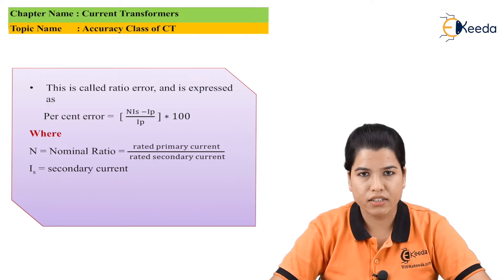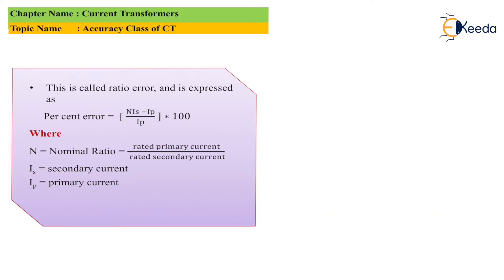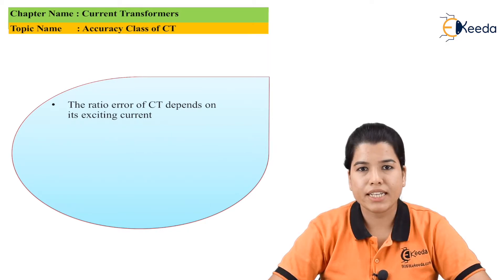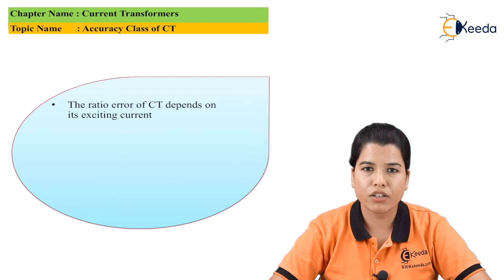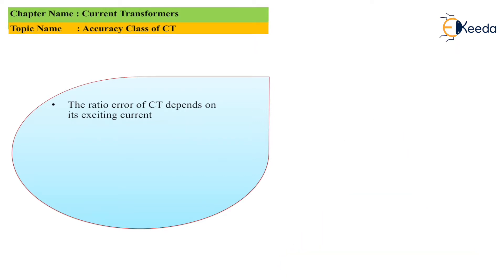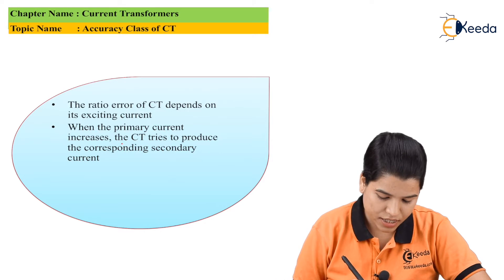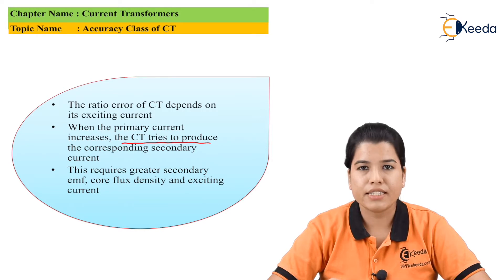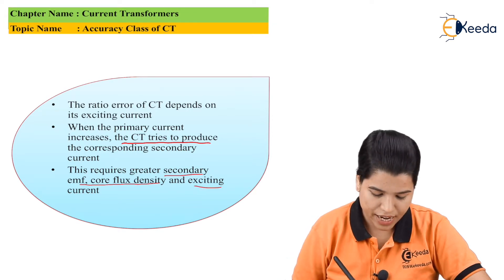Is is the value of secondary current and Ip is the value of primary current. The ratio error of the CT depends upon its exciting current. The exciting current is the phasor addition of the working component current and the magnetizing current. When the primary current increases, the CT will try to produce the corresponding secondary current, which requires greater secondary EMF, then core flux density and exciting current.